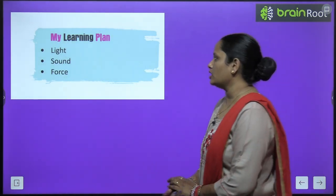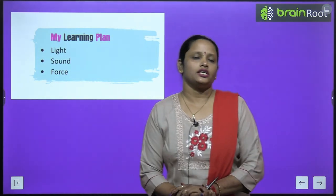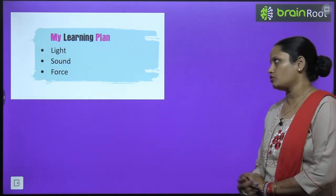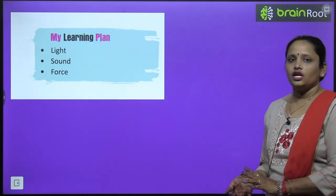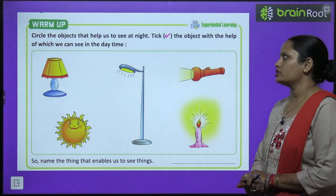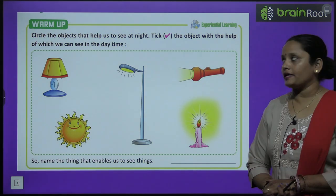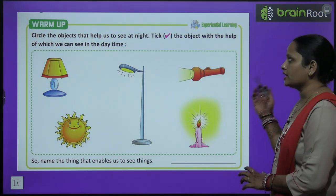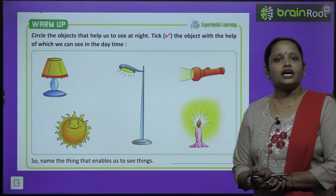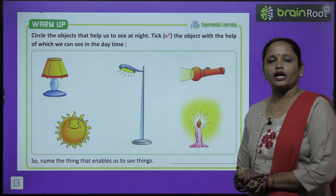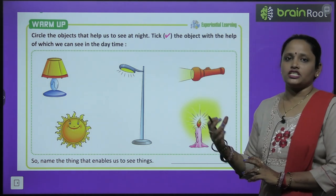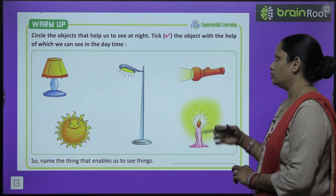In this we are going to learn about these three things: light, sound and force. What is light, what is sound and what is force? So let's start with the warm up exercise. Circle the object that helps us to see at night. In sab cheezon ko aapko circle karna hai jiski vajah se aap raat mein dekh sakte ho.